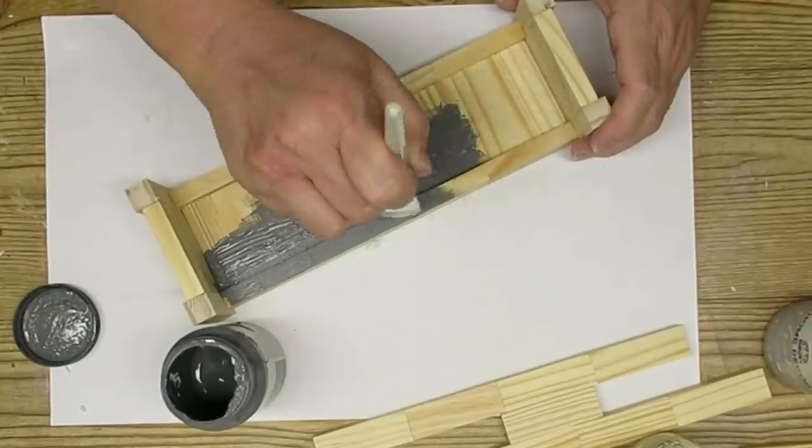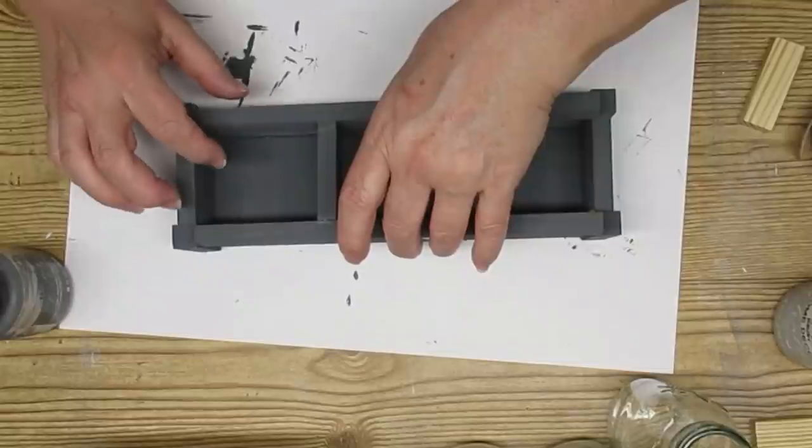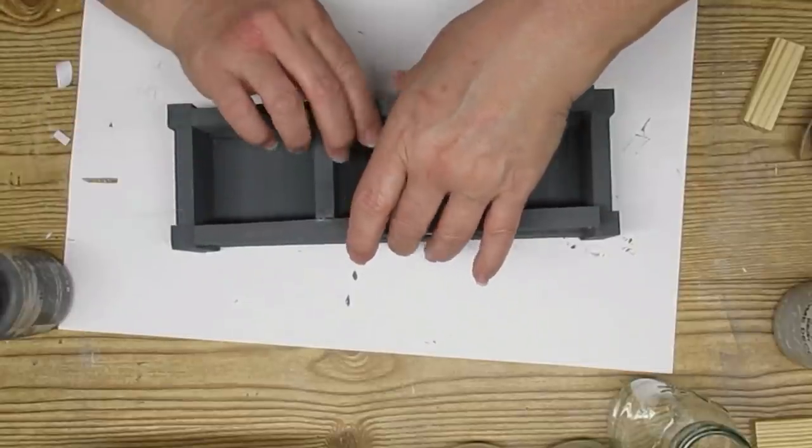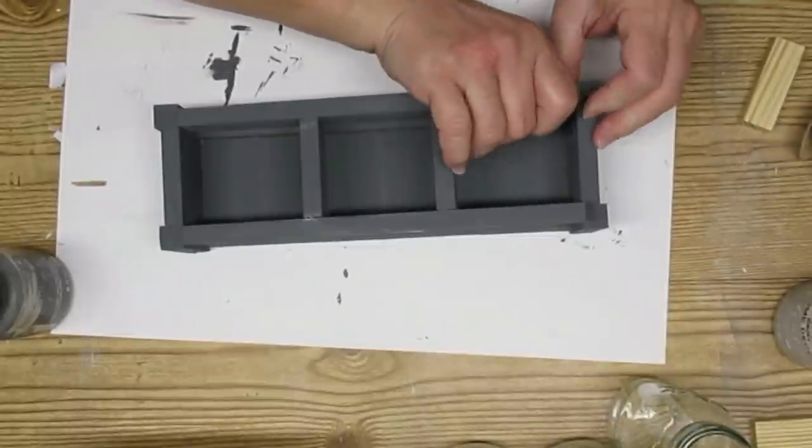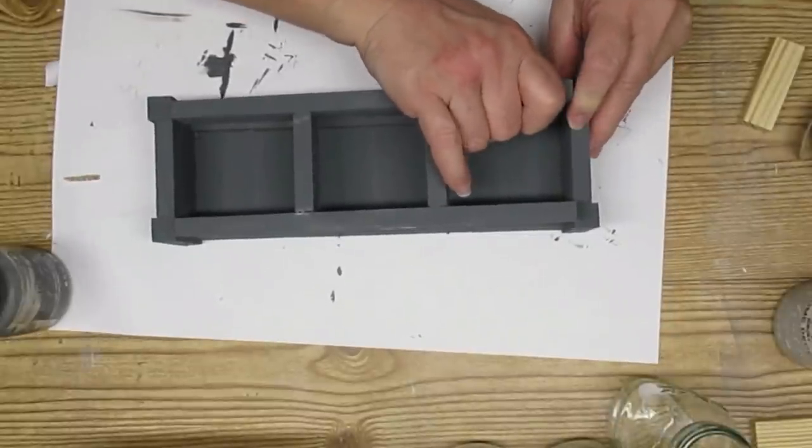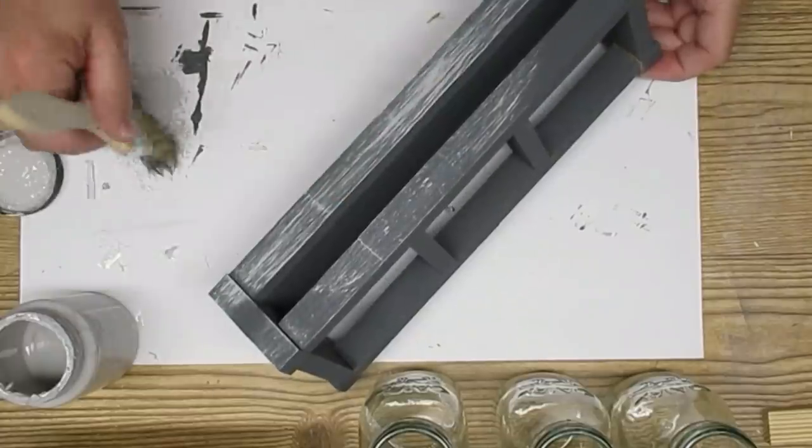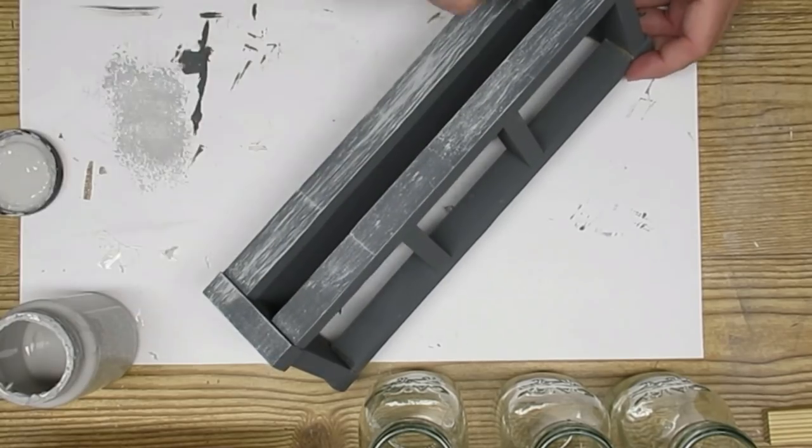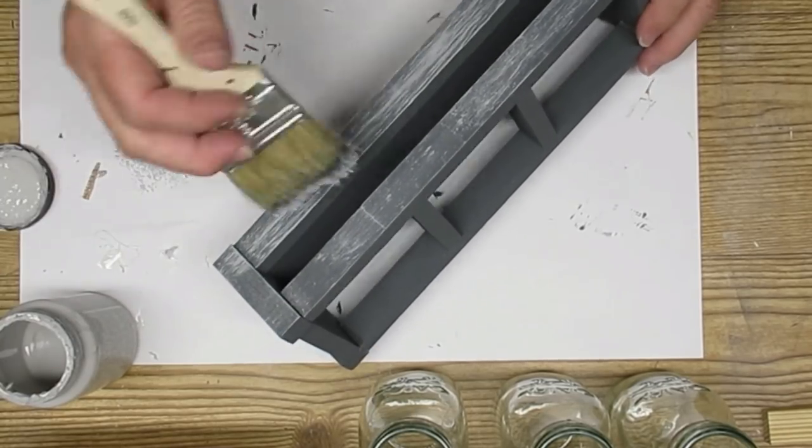It's going to get a coat of Maui Sand chalk paint by FolkArt, and then I'm going to finish off the assembly. I'm just going to add the top piece and then distress it with some lighter gray chalk paint and a little bit of white as well.